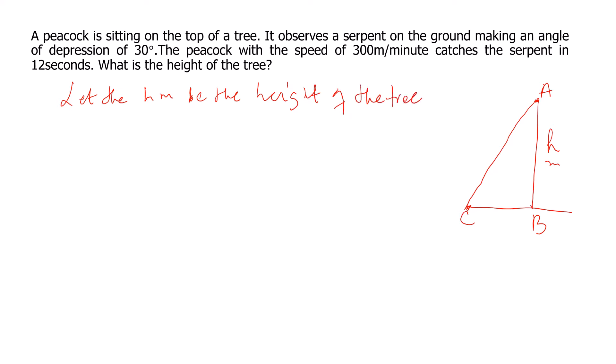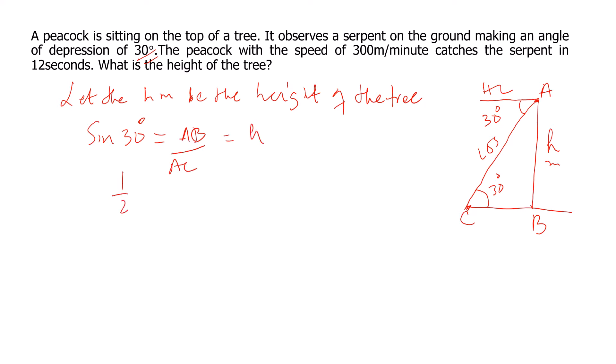The angle of depression is given. From point A, the horizontal level and line of sight form the angle of depression, which is 30 degrees — also 30 degrees by alternate interior angles. Since we don't know the adjacent side BC, we use sine 30. Sin 30 equals opposite by hypotenuse, which is AB by AC. Sin 30 is 1 by 2, so 1 by 2 equals h by AC, giving AC equals 2h meters.